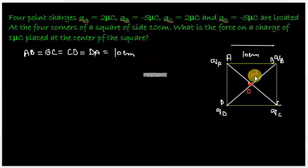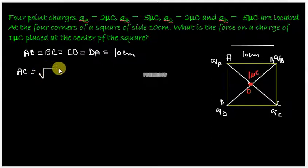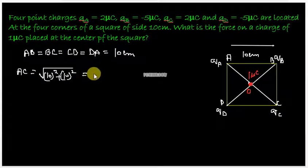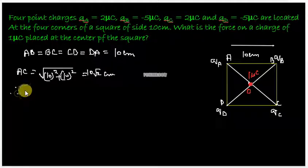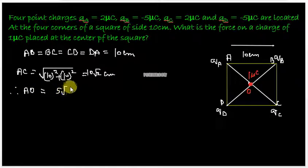And now what's the length AC? We know by Pythagoras theorem this length AC would be square root of 10 square plus 10 square as it gives the hypotenuse of the right angle triangle. So that's root 2 times 10 or 10 root 2 centimeters. Now that's my diagonal. Therefore what is the half of the diagonal that's AO? That would be 5 root 2 centimeters.